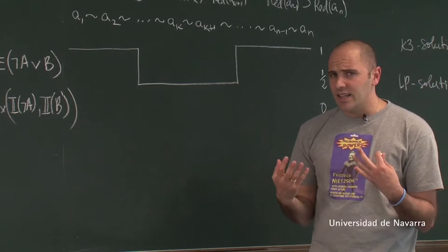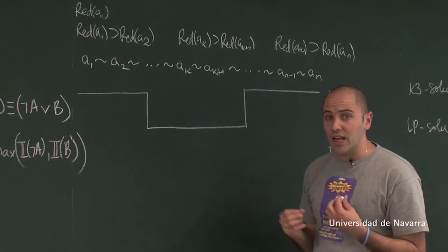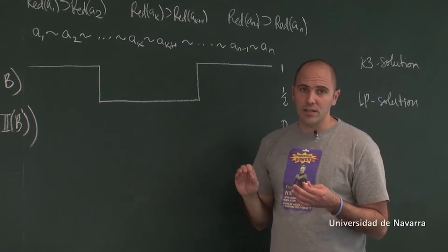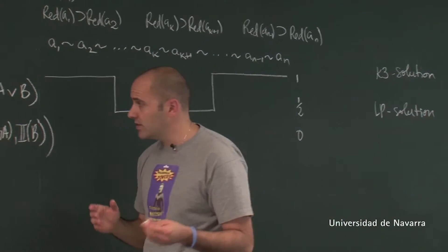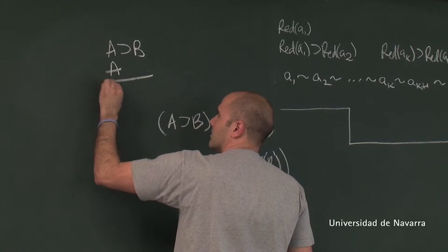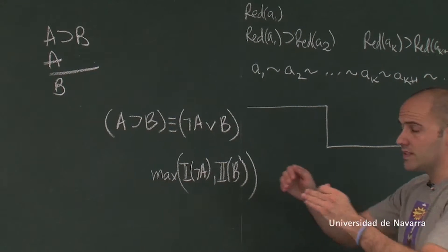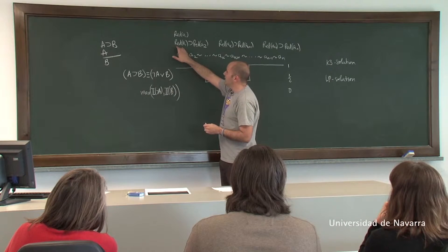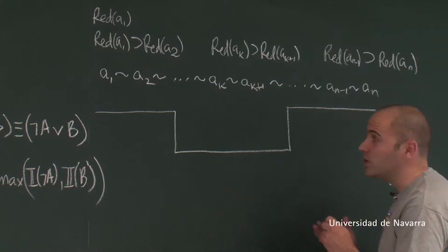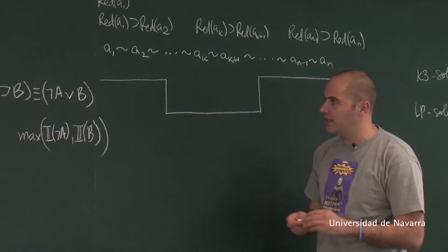The problem in classical logic was that if the first is red and the last one is not red, then there must be a false conditional, in particular because of the inference of modus ponens. This inference is classically valid. So since the inference that leads you from the first one being red to the last one being red is valid, there must be a false conditional with a true antecedent and a false consequent — a sharp distinction.